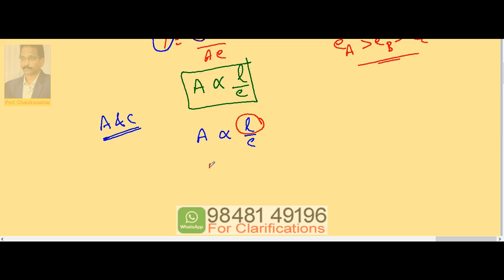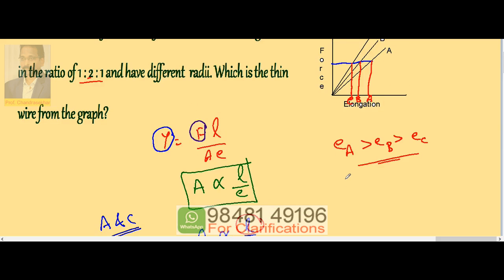Therefore area of A divided by area of C is E of C by E of A. Already we know EA is greater than EC, that means this is less than 1. So area of A is less than area of C. Among A and C the thin wire is A.